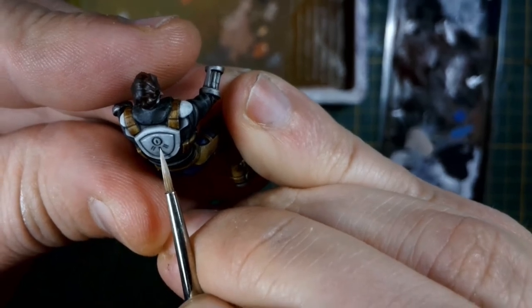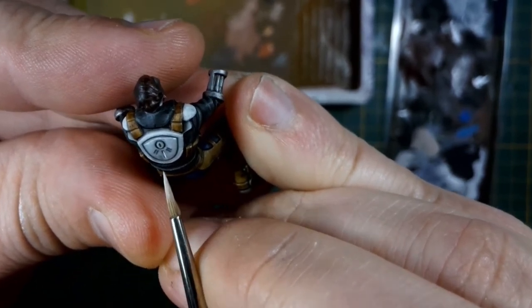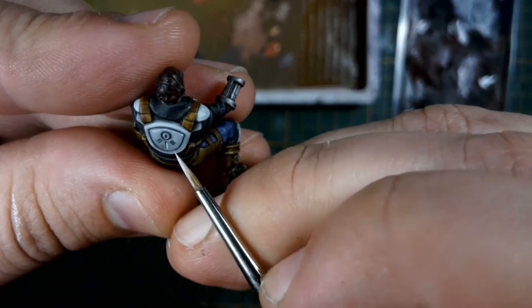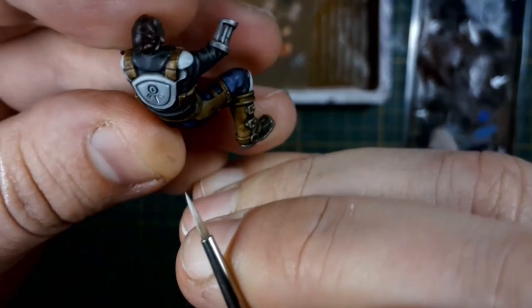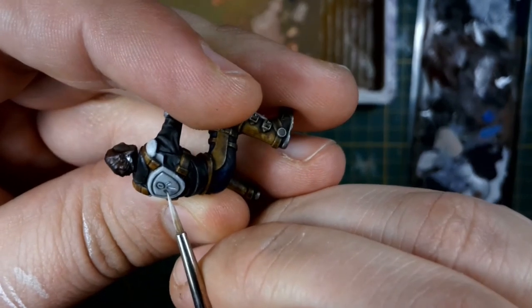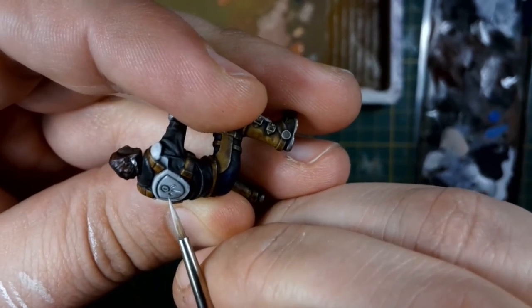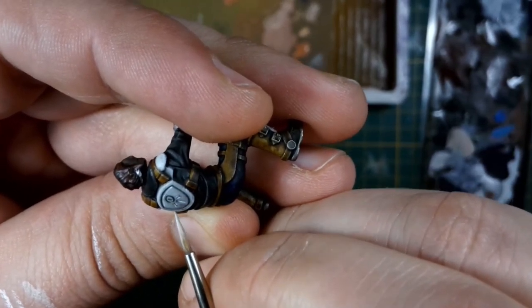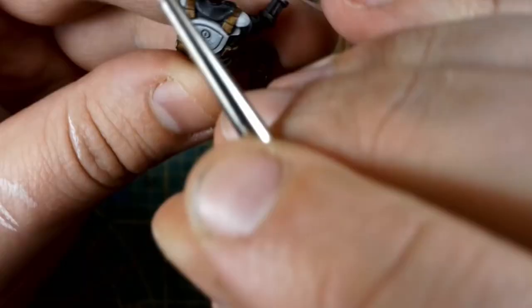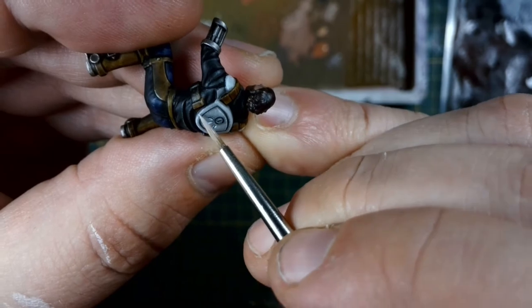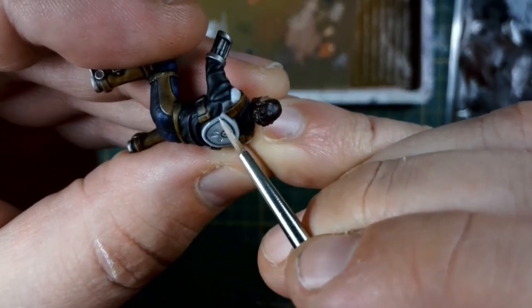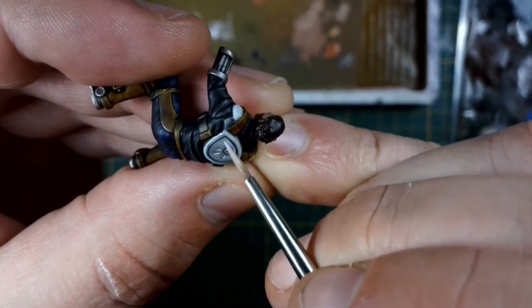After I was done doing all the edge highlights with white, I still used the white I had on my palette to fill in all of the recesses that I wanted to have the orange glow afterwards. So these need a white undercoat to really pop, so I'm just doing that at this stage, getting them ready for that small amount of accent color. And if I was unhappy with the highlighting, I sort of touch it up again like I'm doing here to get a nice crisp edge on it.